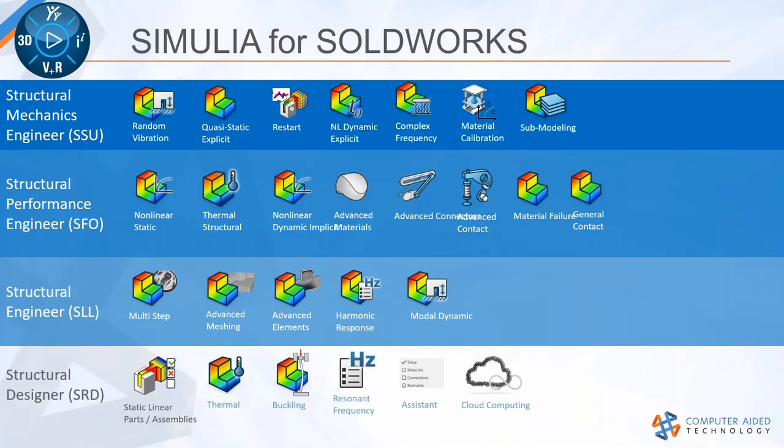So, product overview: there are four flavors of structural simulation roles on 3D Experience. The bottom role is the structural designer role, which does basic linear static analysis for parts and assemblies, some thermal analysis, eigenvalue buckling, and that type of stuff. This is more or less akin to what simulation professional in SOLIDWORKS can handle. Moving up the chain, you get into structural engineer where we can have hexahedral elements, different element types, and multi-step analysis. All of these solvers are based on the Abaqus solver.